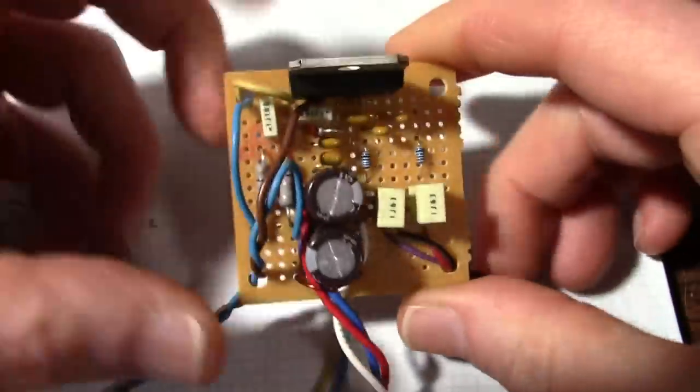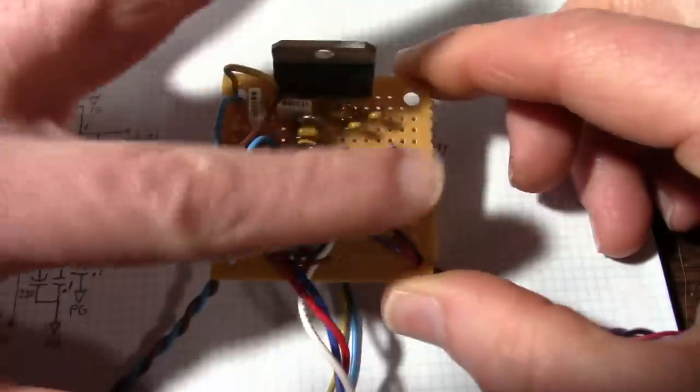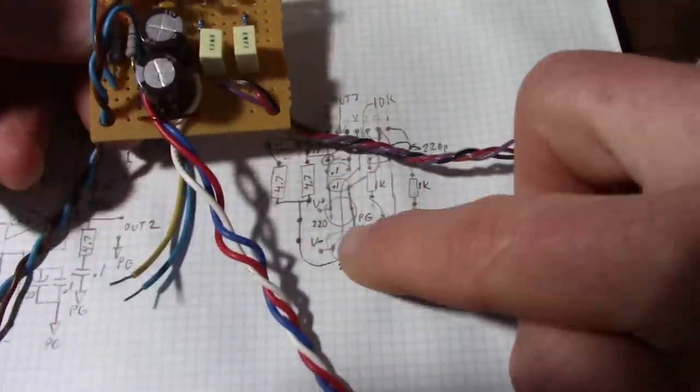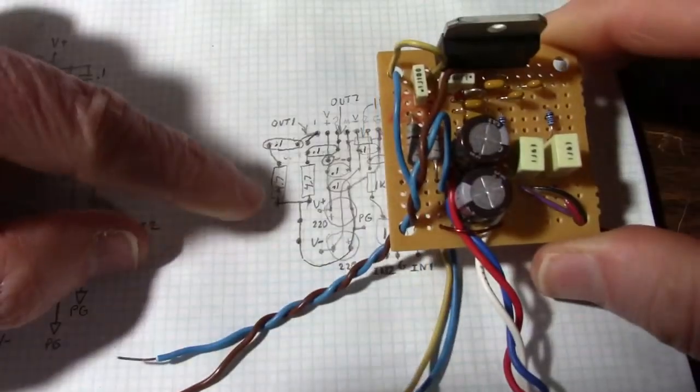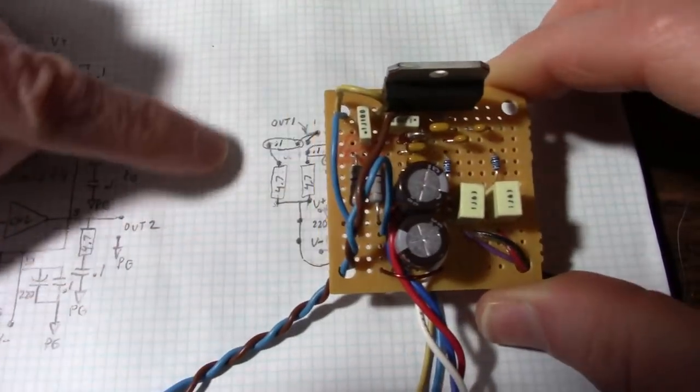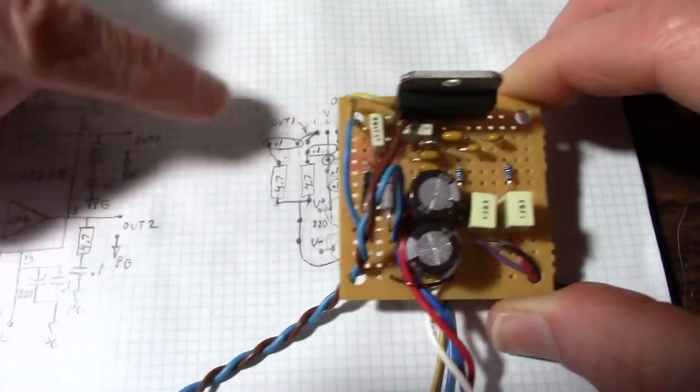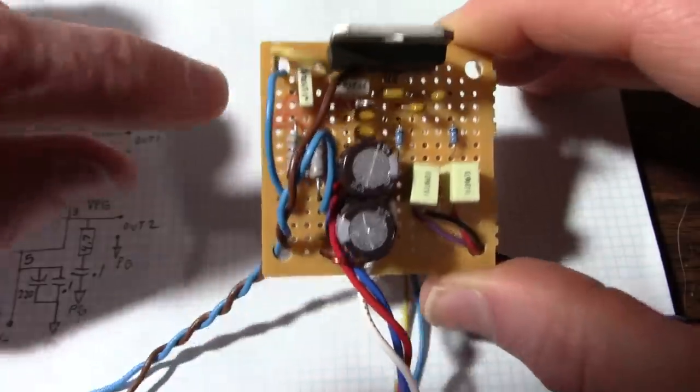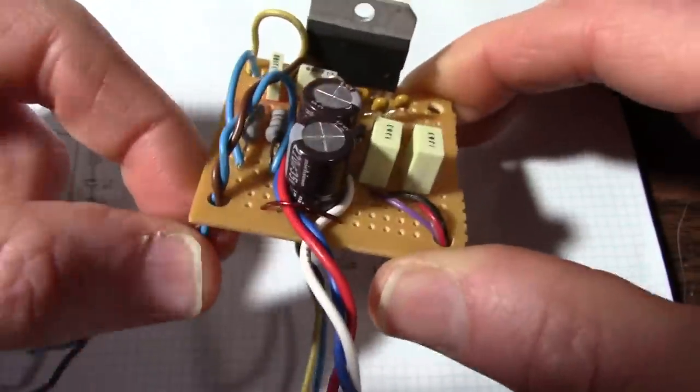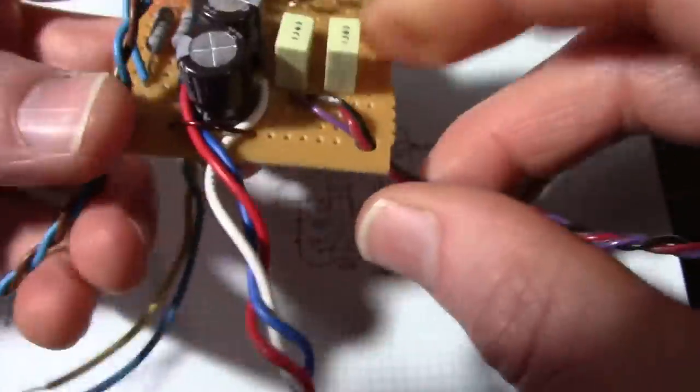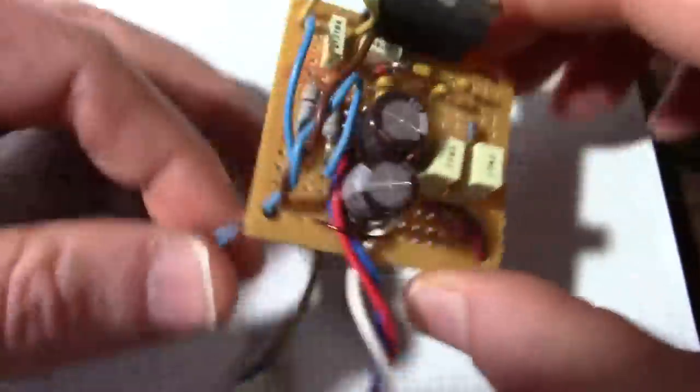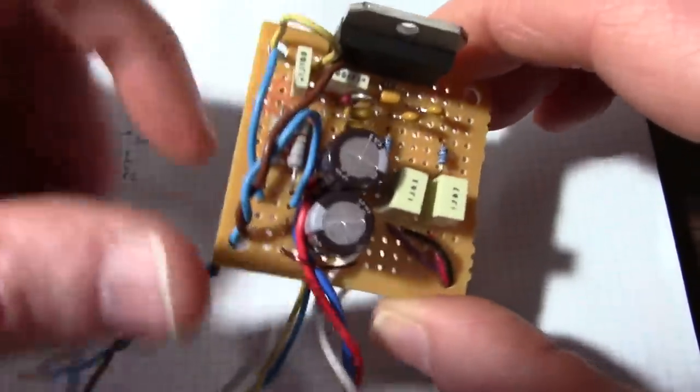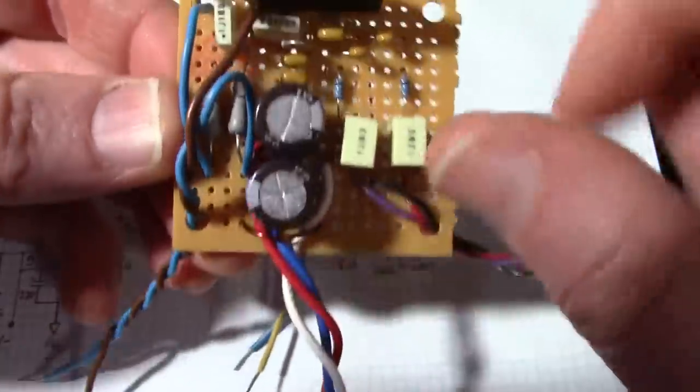And here it is. Not much to it. It all fits on this little perf board here. You can see I followed it pretty much as close as I could. I actually turned this capacitor sideways because of this hole here. I didn't have a lot of room. I ran the wires through the holes here to act as strain reliefs because as I test this thing I'm going to be moving it around and I don't want the wires to weaken and break off.